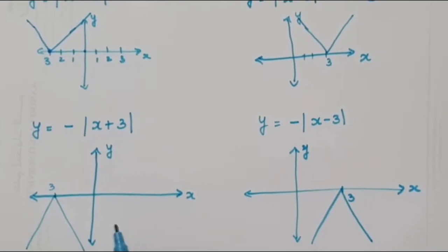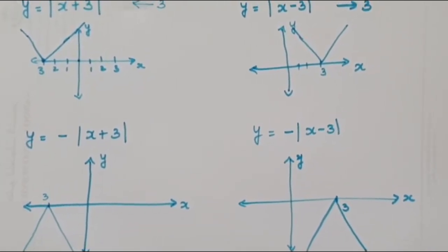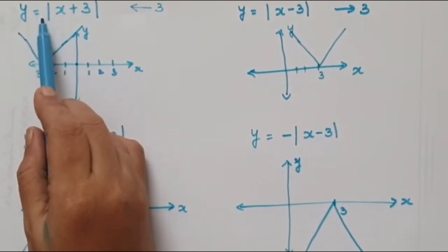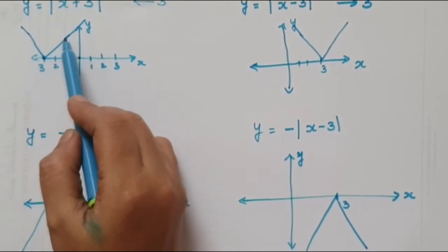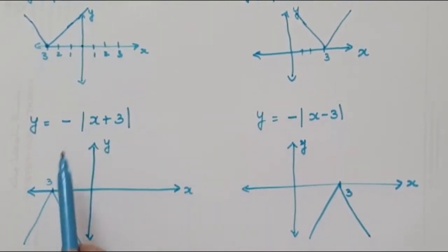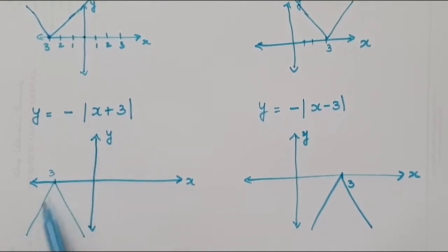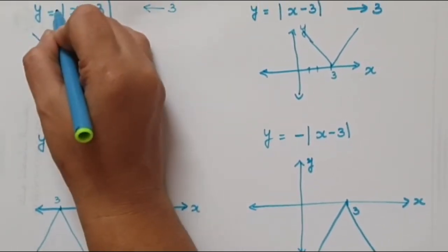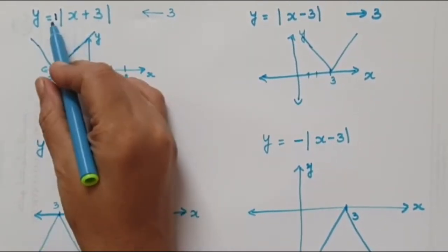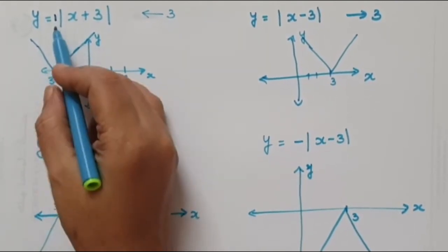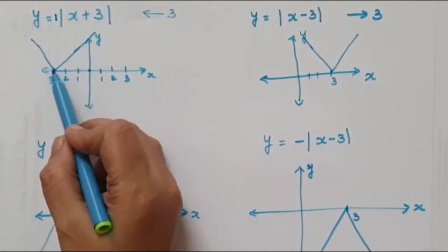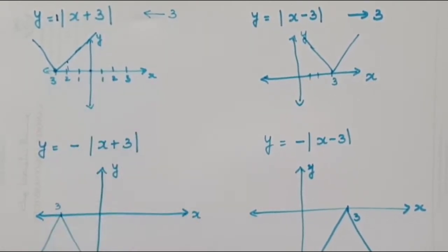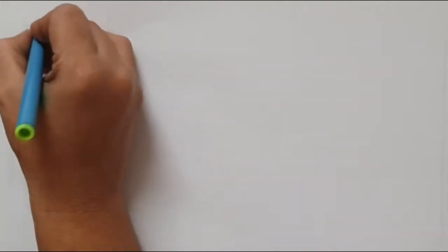From this we see that the graphs are always V-shaped curves. When the absolute value function has a positive sign, the graph will open upward. If there is a negative sign before the absolute value, the graph will open downwards. Also, the coefficient value here is 1, which is called the slope.